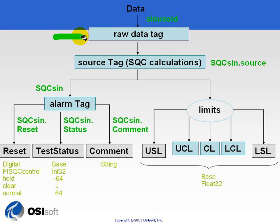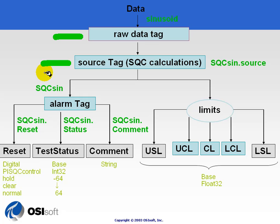The raw data tag is where it all starts. You've got some tag that you'd like to help differentiate the normal variations from assignable cause variations. In order to do that, you're going to be building a source tag that sits on the server, and in addition to that source tag, some other tags that we use to store things like the control limits and the status. Let's take a look one by one at the different elements here.